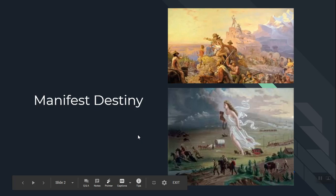Let's talk first about Manifest Destiny. You can see here there are two very famous portraits. The top portrait is supposed to be the ideal vision of the West. You can see frontiersmen and settlers pointing out towards an empty land, wagons with people moving. The bottom one is supposed to be Lady Liberty going west and spreading civilization — that's the idealistic vision of what Manifest Destiny was.